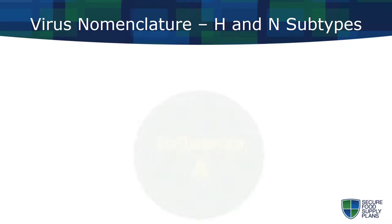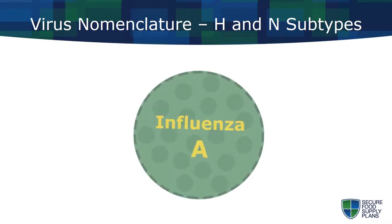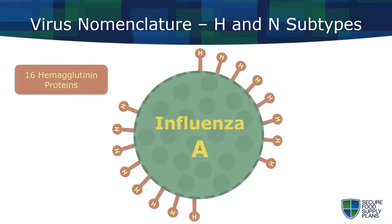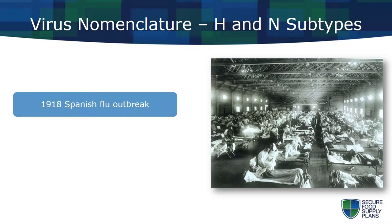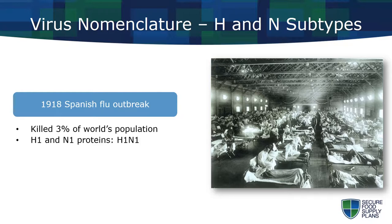The influenza A virus subtypes are named for one of 16 different H proteins and 9 different N proteins found on the surface of the virus. For instance, the virus that caused the 1918 Spanish flu outbreak, which killed some 3% of the world's population, had the H1 and N1 type of surface proteins, so it is referred to as H1N1.